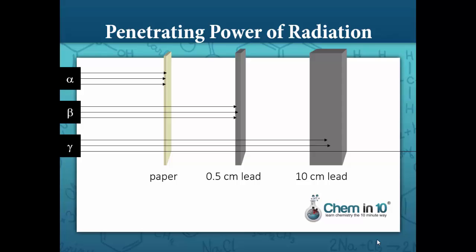Beta particles can go through paper, but are stopped by relatively thin lead. Gamma rays, on the other hand, can only be stopped by very thick lead most of the time.